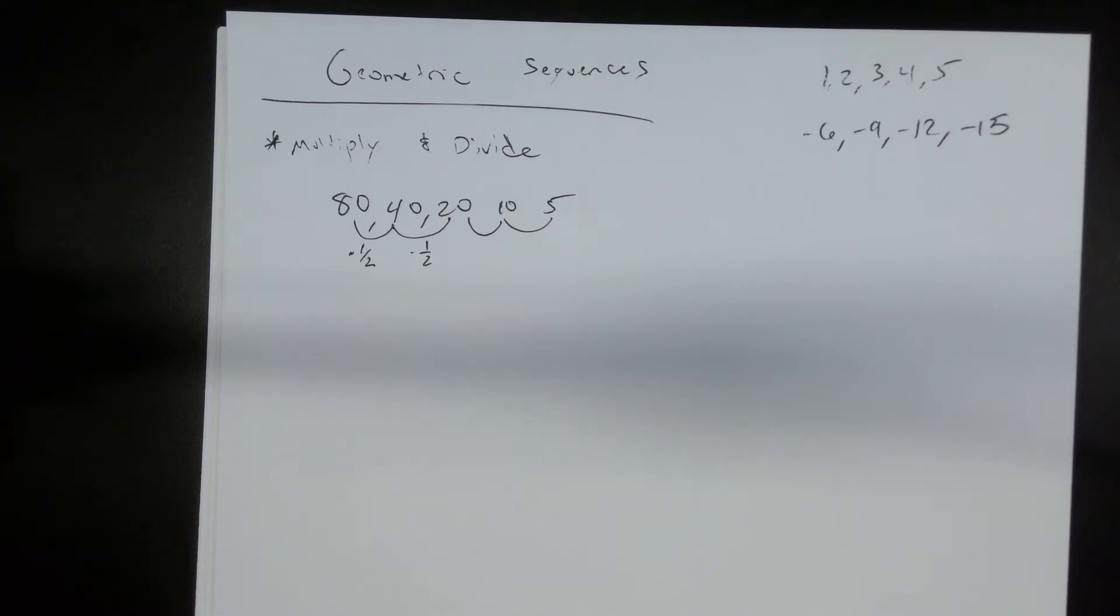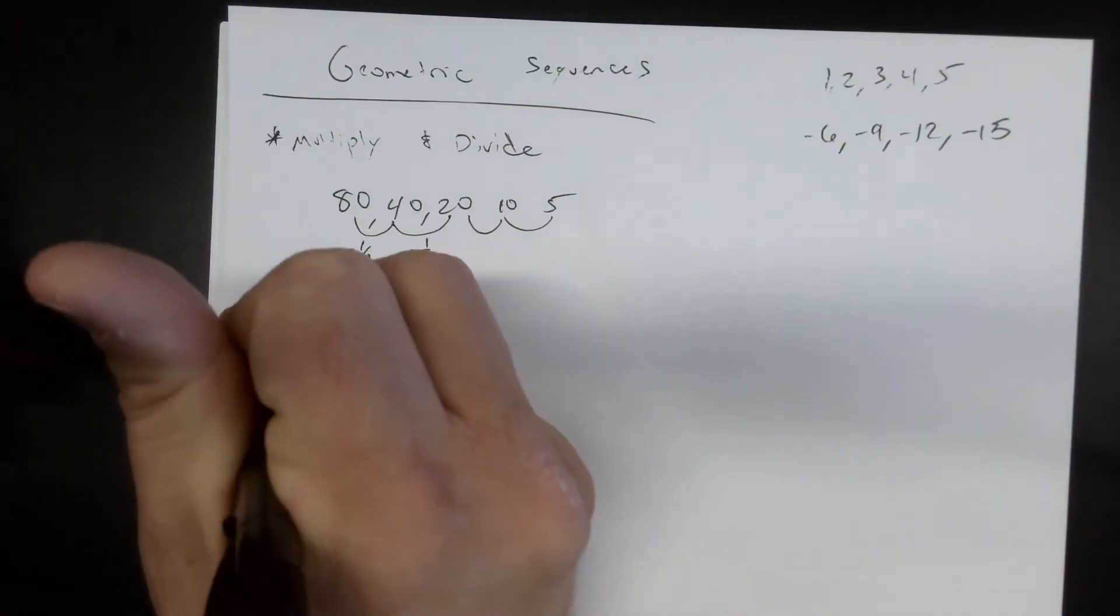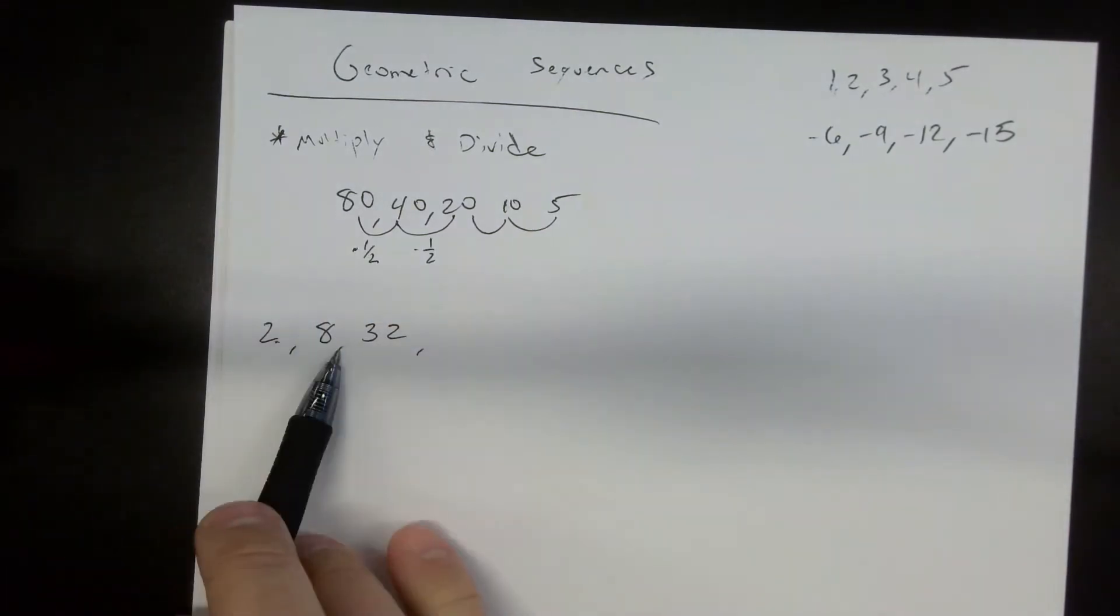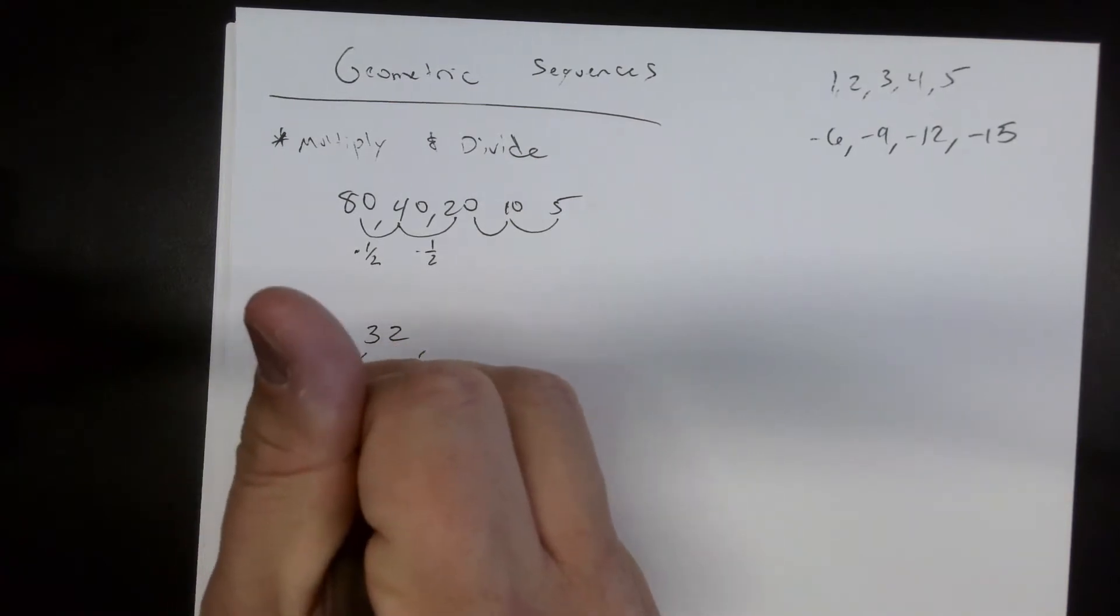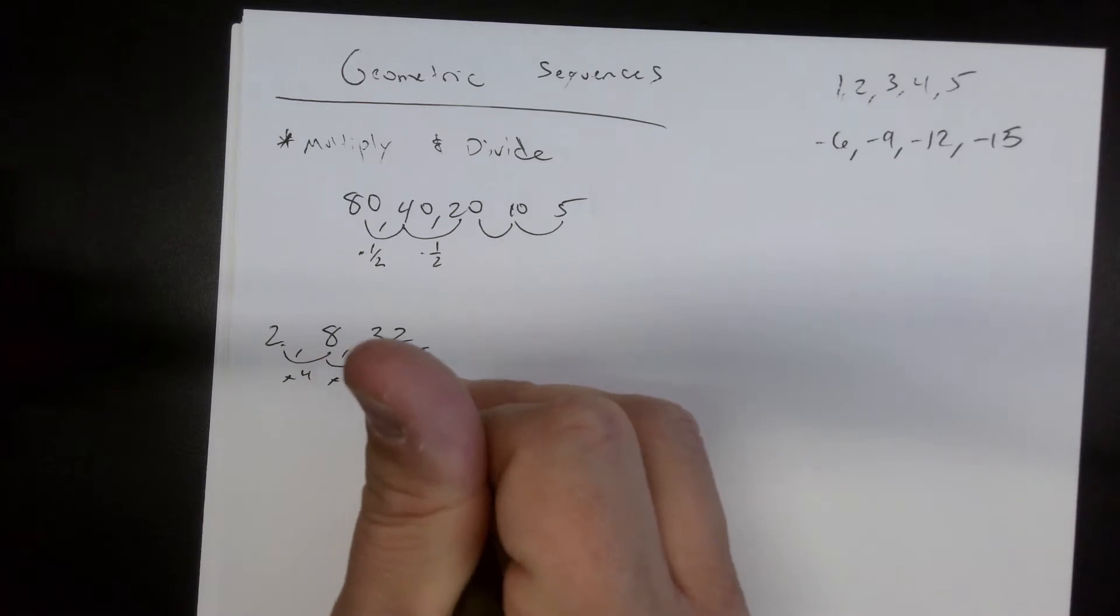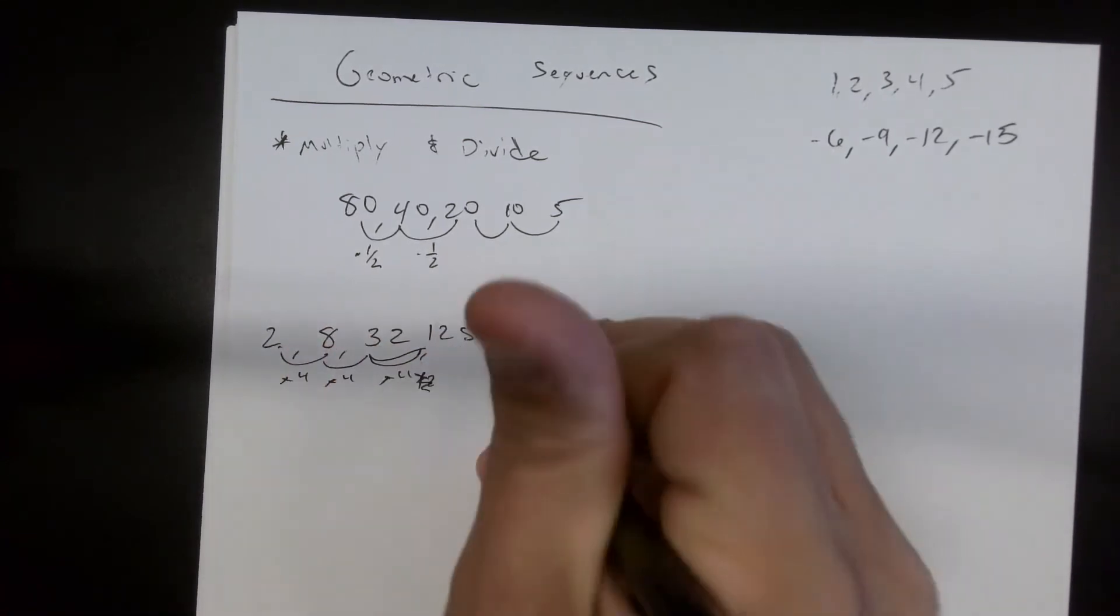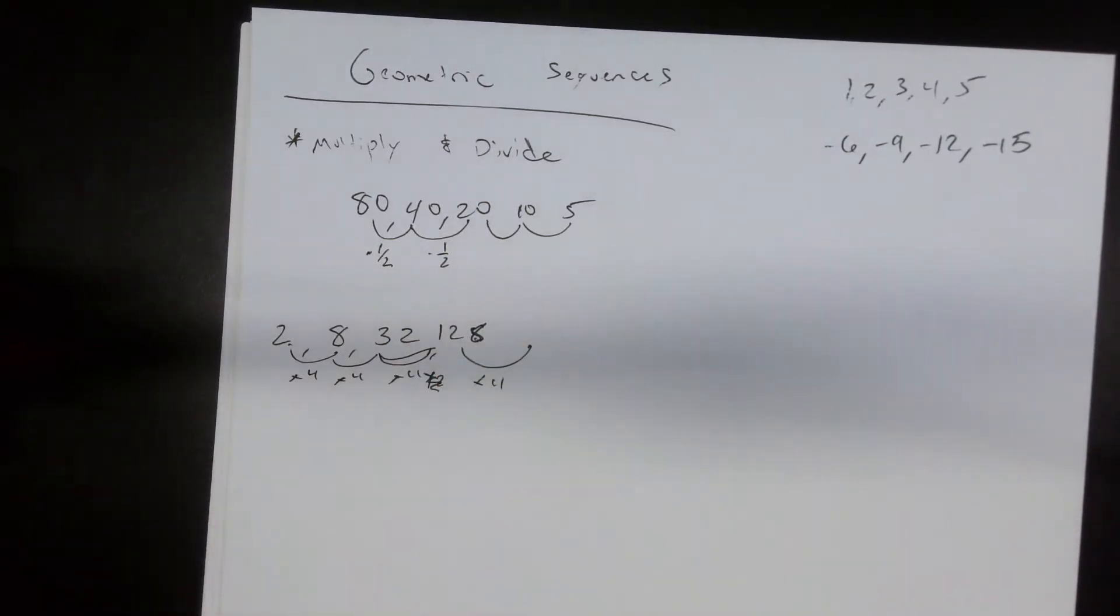Geometric sequences are multiply and divide. So once again, if I have 2, 8, 32, what's happening between each one of these? We're times by four. So in order to get the next one, we just times by four and get 128. And if we needed to get the next one, we'd just times by four and so on and so forth.